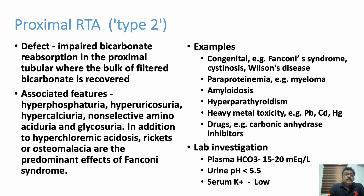Type 2 is proximal RTA — impaired bicarbonate reabsorption in the proximal tubules where the bulk of filtered bicarbonate is normally recovered. This leads to acidosis as alkali is lost. Associated features include hyperphosphaturia, hyperuricosuria, hypercalciuria, non-selective aminoaciduria, and glycosuria in addition to hyperchloremic acidosis. Rickets and osteomalacia are predominant effects of Fanconi syndrome, which represents a type of proximal RTA.